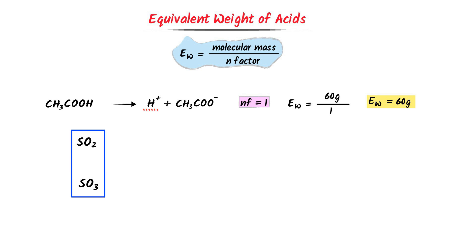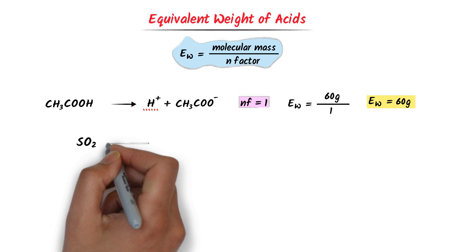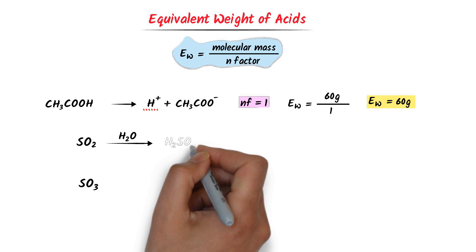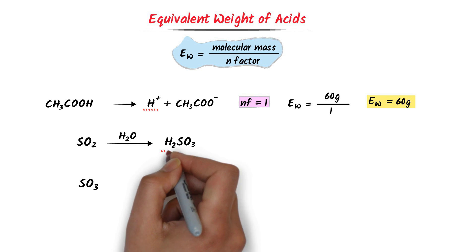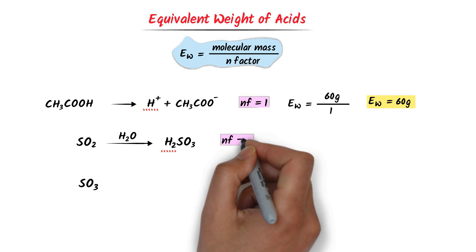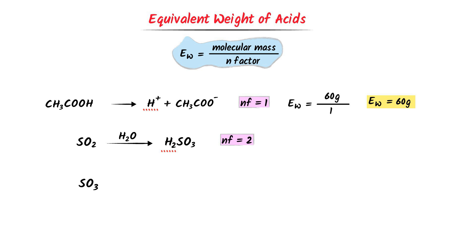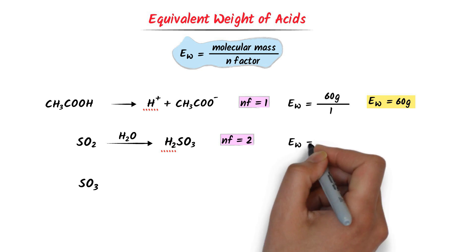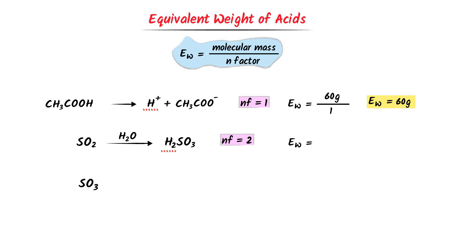In case of sulfur dioxide and sulfur trioxide, we can see that they do not contain any hydrogen ion. So we add water to sulfur dioxide. I get H2SO3. There are 2 hydrogen ions, so the N factor of sulfur dioxide is 2. Its equivalent weight is equal to the molecular weight of sulfur dioxide, which is 64 gram, upon N factor which is 2. After calculation, I get 32 gram. So the equivalent weight of sulfur dioxide is 32 gram.